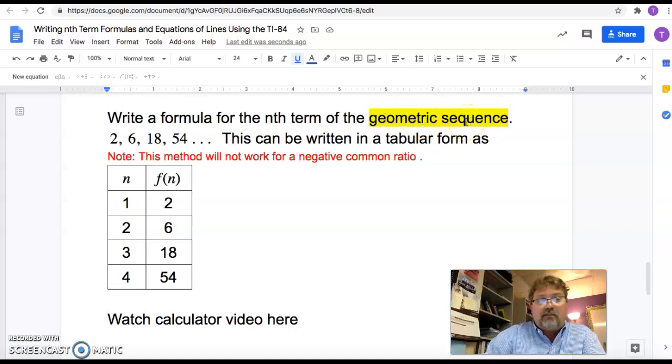And very much like the last one, you do have to identify the sequence. You do have to know what type you're dealing with. This has a common ratio of 3, and it's not arithmetic and so forth.